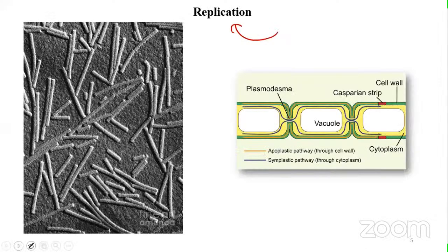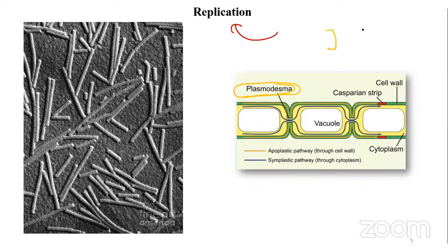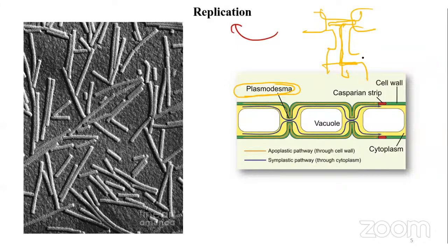Movement is how the virus, after replication and establishment, infects new cells. The major component helping in virus movement is plasmodesmata. Through these channels between cells, the virus moves from one cell to the next.